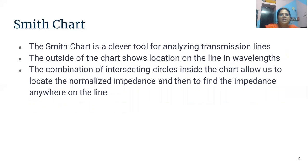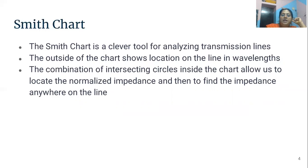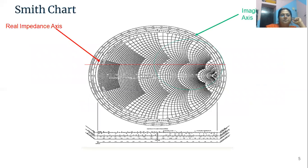The Smith chart is a clever tool for analyzing transmission lines, and its main application is also in the analysis of transmission lines. The outside of the chart shows locations on the line in wavelengths, so the length of the transmission line is taken in terms of wavelengths. The combination of intersecting circles inside the chart allows us to locate the normalized impedance and then to find the impedance anywhere on the line. These are the real impedance axis, and these circles are showing the values of the imaginary impedance axis. These lengths are considered in terms of wavelength.